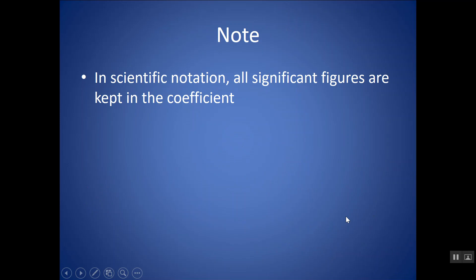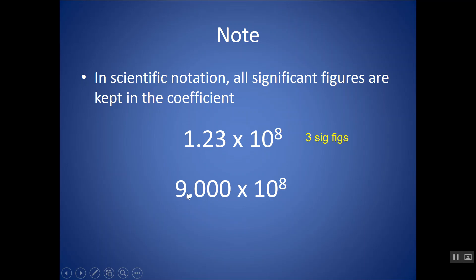In scientific notation, all significant figures are kept in the coefficient. So this has 1, 2, 3 significant figures. Something like 9.000 — the reason why those zeros are there is because they are significant, so this has 4 significant figures. If you're ever asked about significant figures and you're looking at a number in scientific notation, you just have to look at the coefficient.